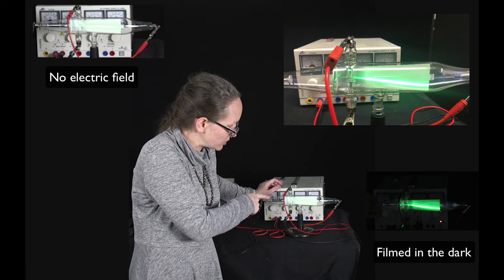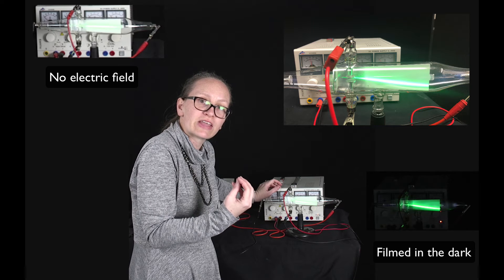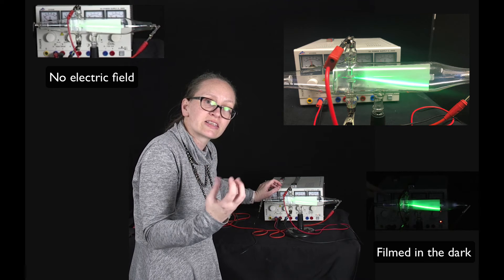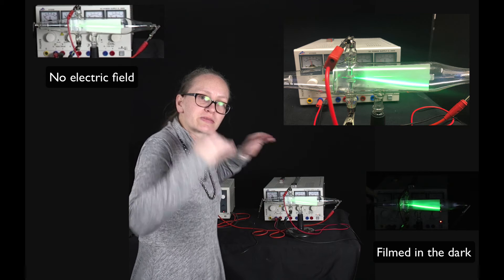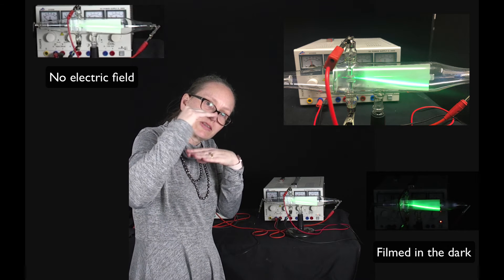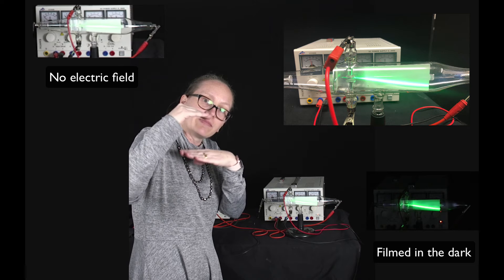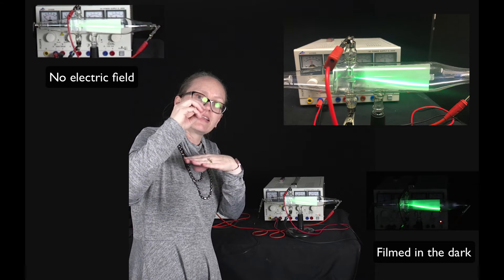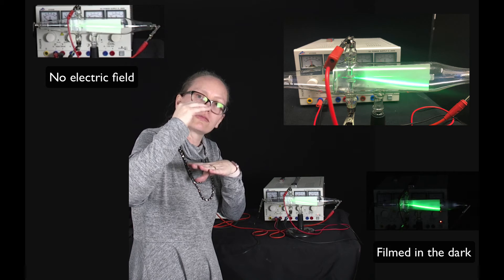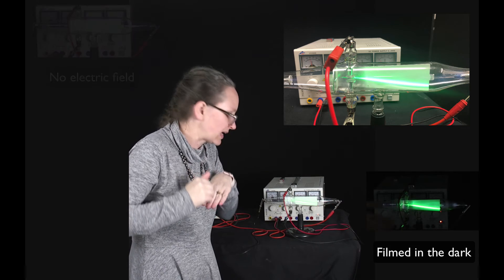And you can see that there is a voltage between these two plates because every now and then it sparks. So that's what happens when the voltage gets high enough. We ionize the air in between them and then electrons jump from the top plate to the bottom plate.